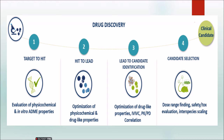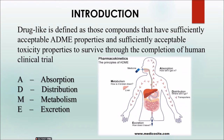This is all about drug discovery. Now let's look at how to determine whether a drug is a drug or not. You should know a background idea about drug likeness. Drug likeness is defined as those compounds that have sufficiently acceptable ADME properties and sufficiently acceptable toxicity properties. There are two properties indicated here: the ADME property and the toxicity property.